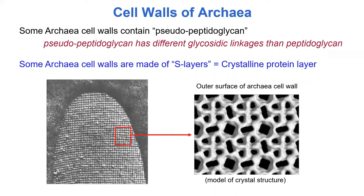That's it for bacteria for now. Archaeal organisms have something called pseudopeptidoglycan — it's a similar structure to peptidoglycan but the chemical linkages are different, so it has a different name. Archaea do not have peptidoglycan; they have other things, one being pseudopeptidoglycan. Some archaeal organisms also have S layers — S stands for surface — which are crystallized proteins found on them. Some unique things as always going on with archaea.